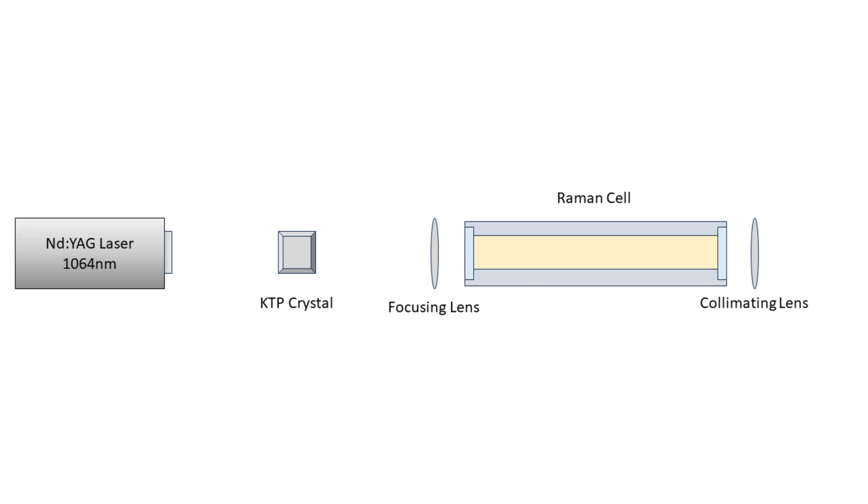The beam of which will pass through a KTP crystal, doubling it to 532nm green. This is then focused by a lens through a window into the Raman cell and the output beam is collimated by a second lens.